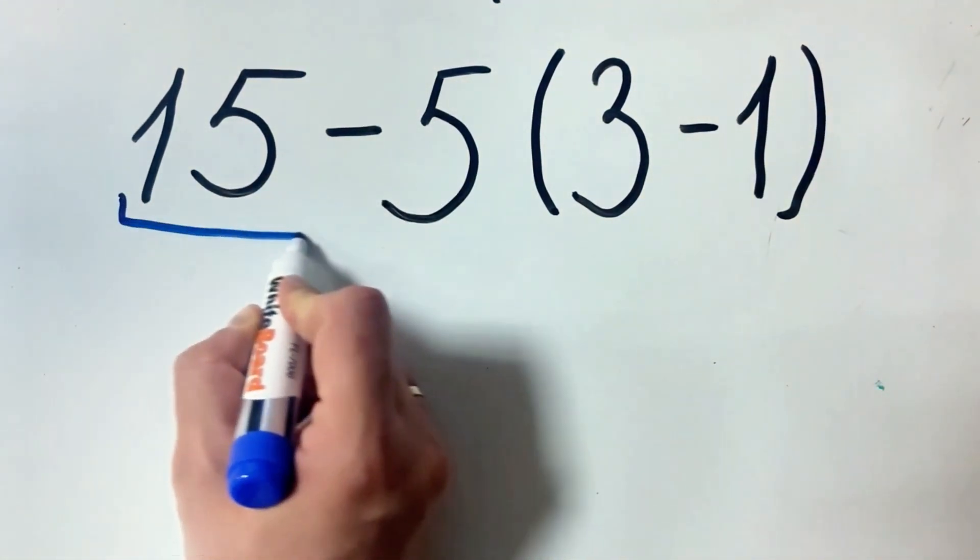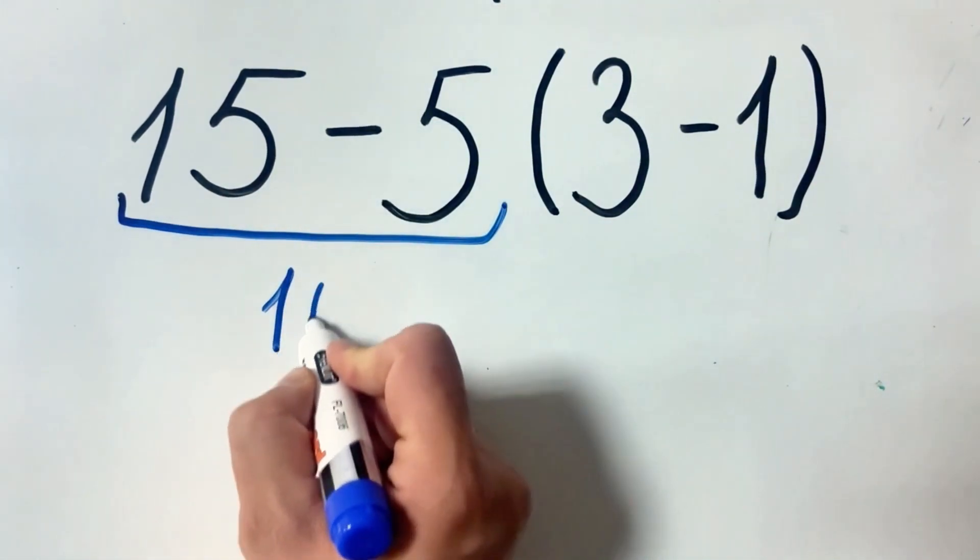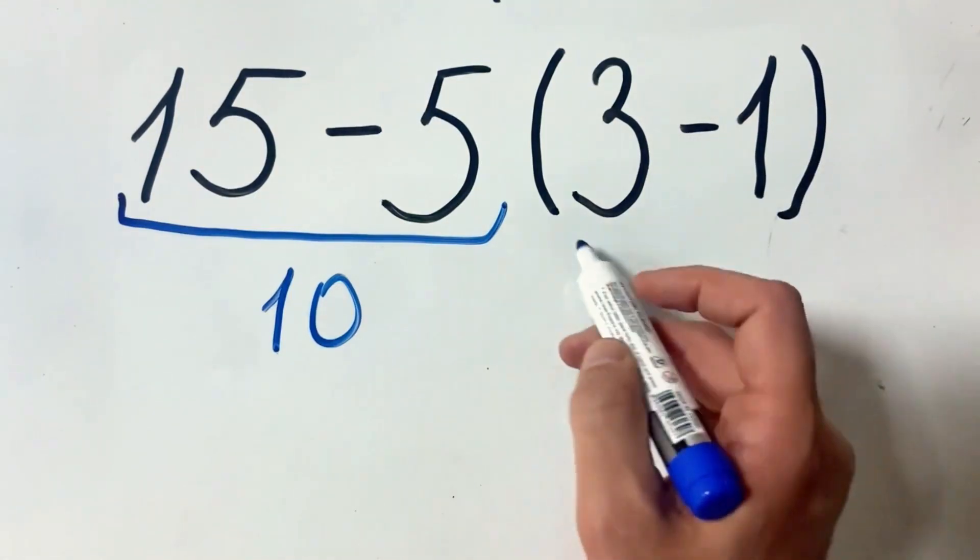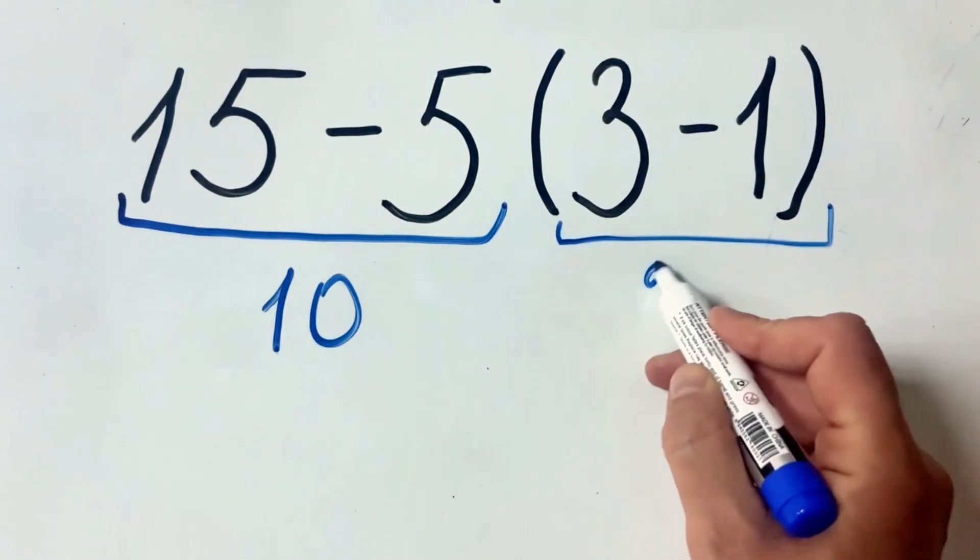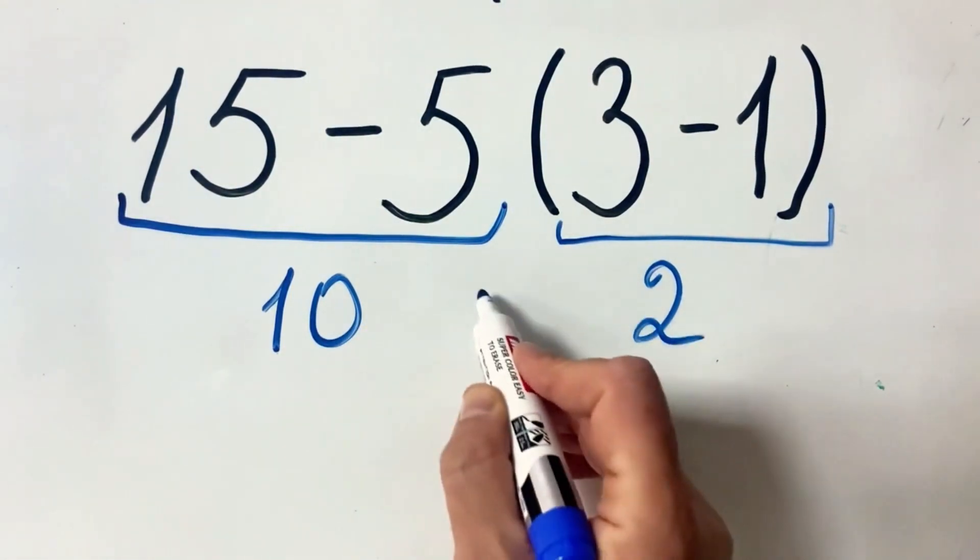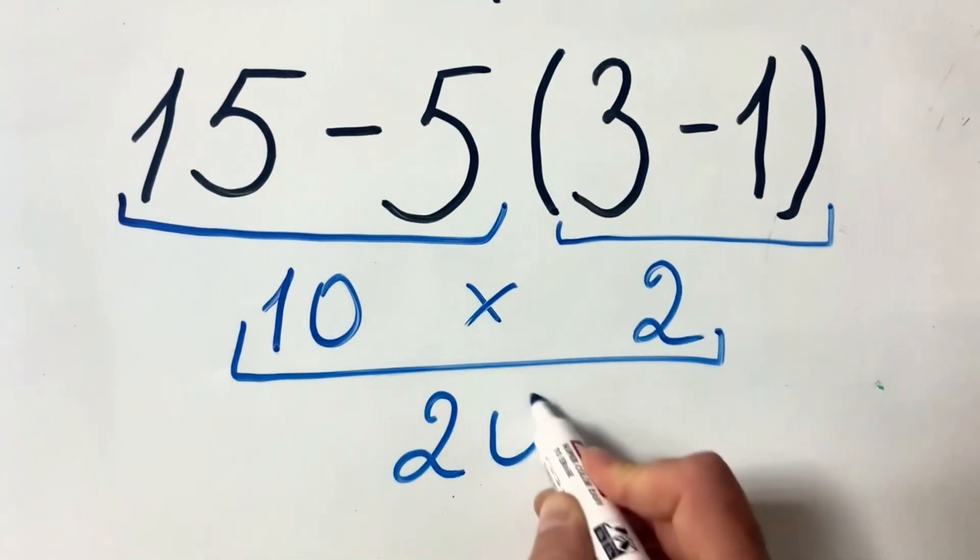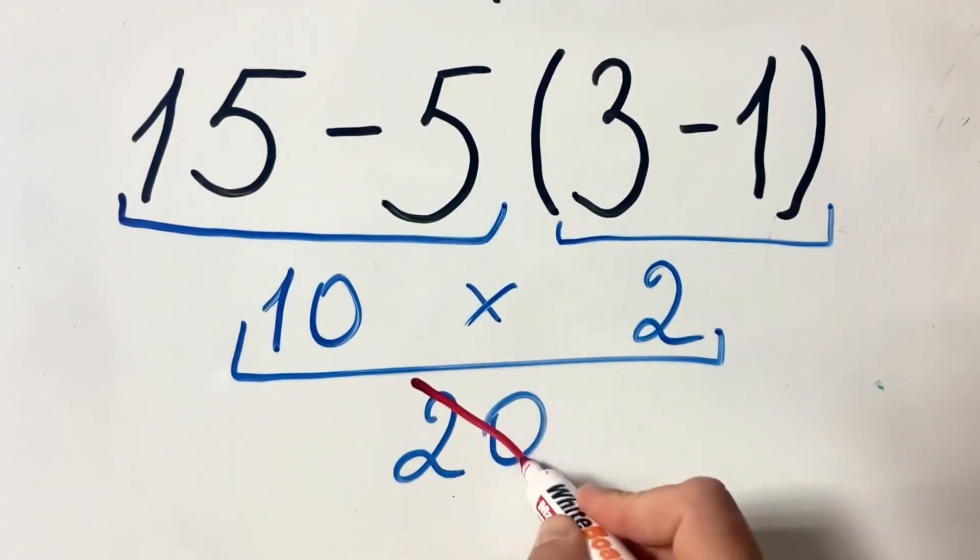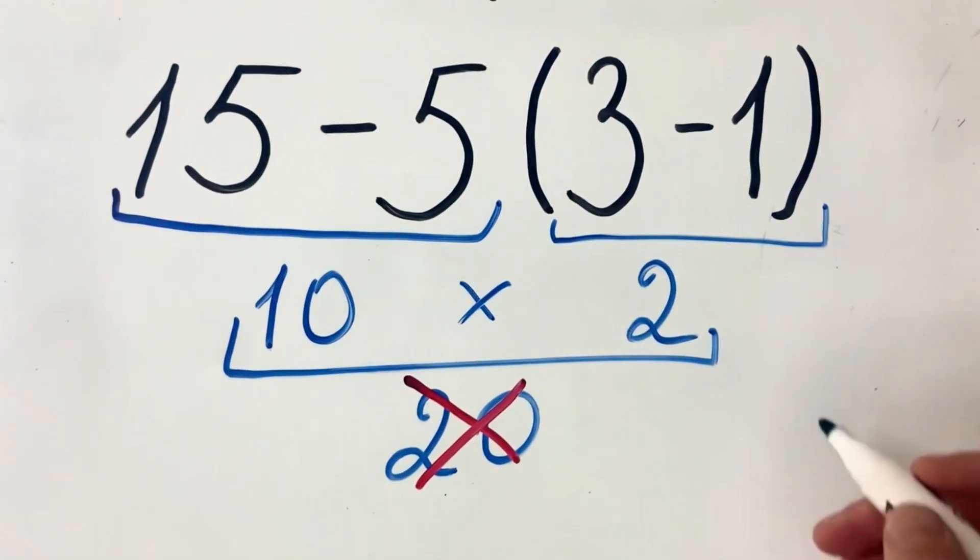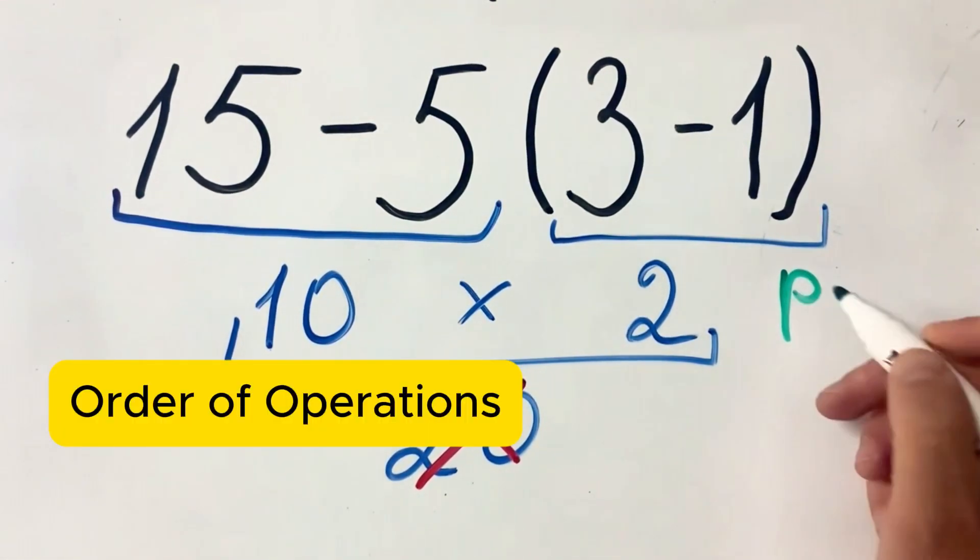15 minus 5 equals 10, 3 minus 1 equals 2, 10 multiplied by 2 equals 20. But this answer is not correct because according to the order of operations, which is PEMDAS...